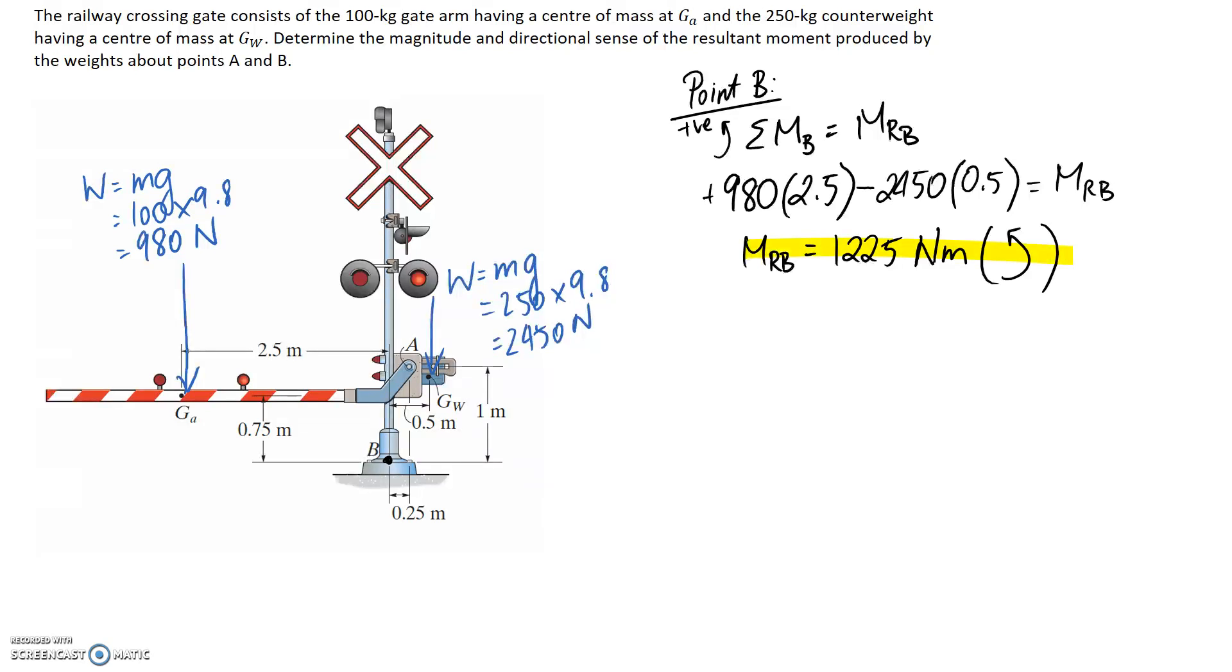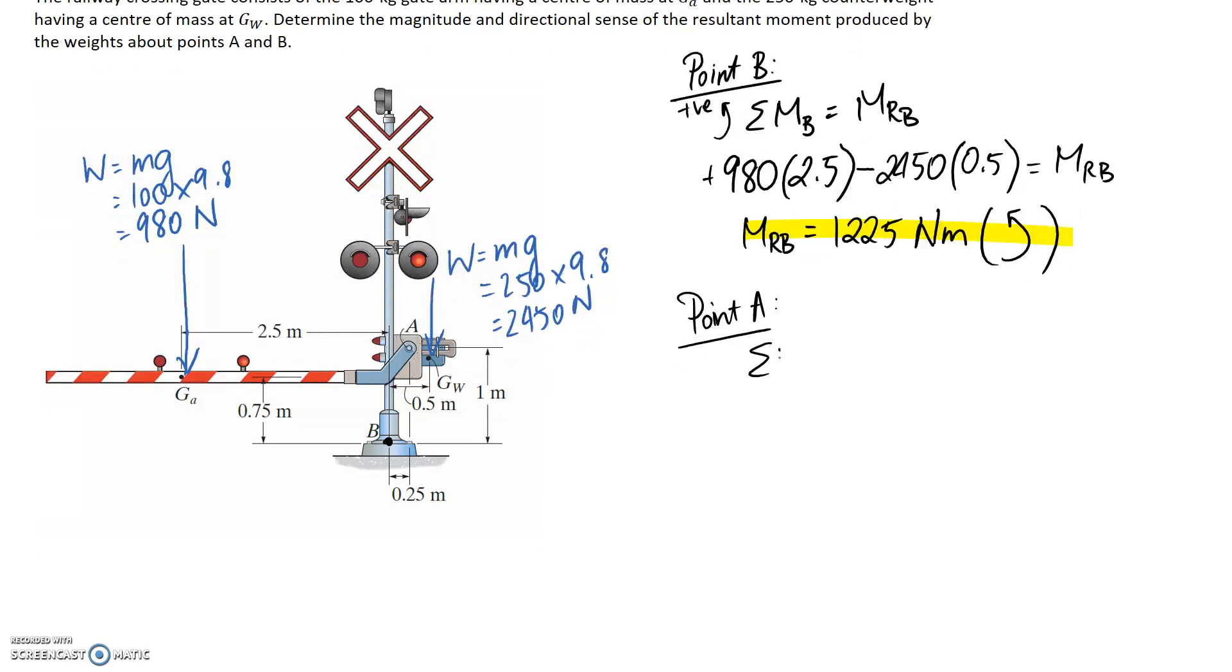Now we just need to repeat this process for the other one, which is point A. So again, we're going to sum our moments. This time my point of interest is A, and it's going to be equal to the resultant moment, this time about point A though. Again, we're going to have the positive direction as anti-clockwise.